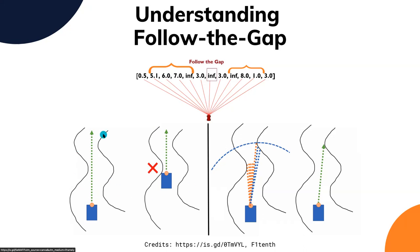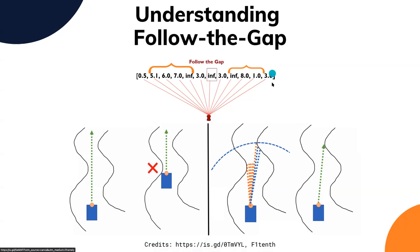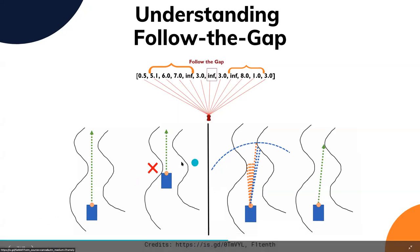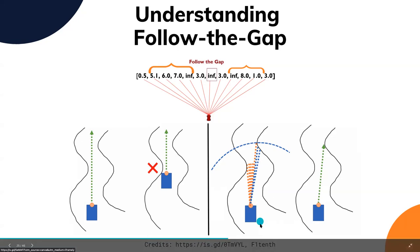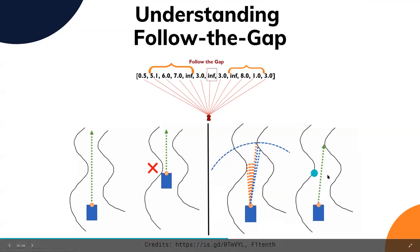The UNCC team in a past year challenge modified Follow the Gap to tackle the problem where a large gap direction might cause a wall collision because vehicle dynamics aren't considered. From the closest point, they start trimming the LiDAR points until there is enough clearance for the car to pass, so they won't consider those points as the largest gap because they're closest to an obstacle. This makes the new path somewhere with enough clearance.